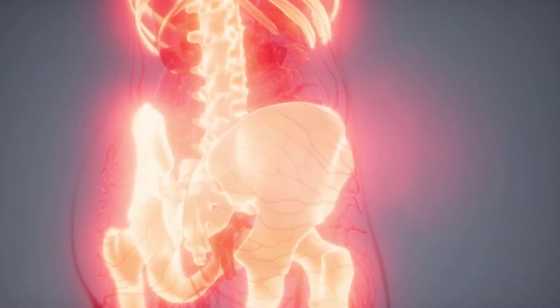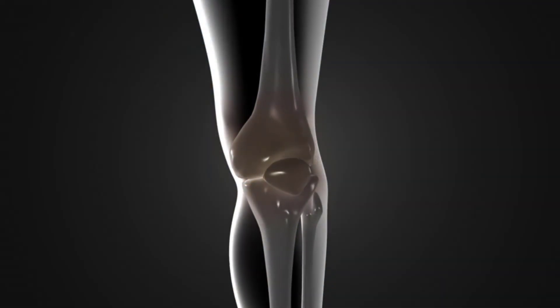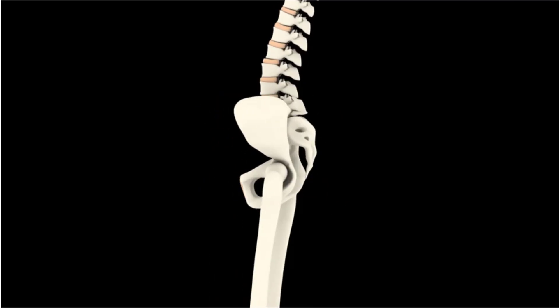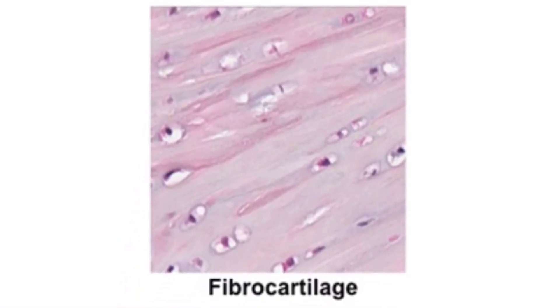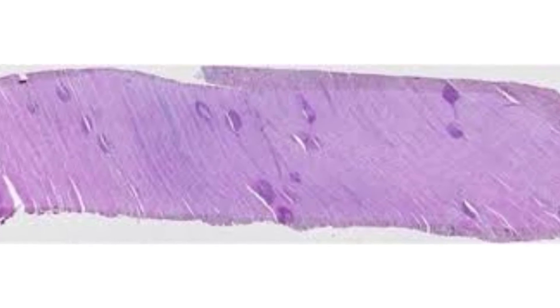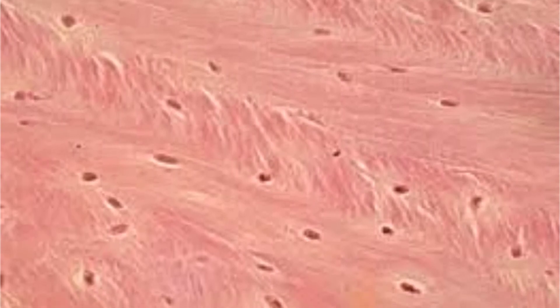Fibrocartilage is a tough form of cartilage that consists of chondrocytes scattered among clearly visible dense bundles of collagen fibers within the matrix. Fibrocartilage is found in portions of your joints, your intervertebral discs, your knees (as in the meniscus), and the pubic symphysis which joins the anterior portions of the hip bones together. Fibrocartilage provides structure and support and is also the strongest type of cartilage. It has the ability to resist strong compression and strong tension, as the areas of the body containing it are subjected to a lot of push and pull. Fibrocartilage has thick collagen fibers, making it somewhat similar to dense regular connective tissue.